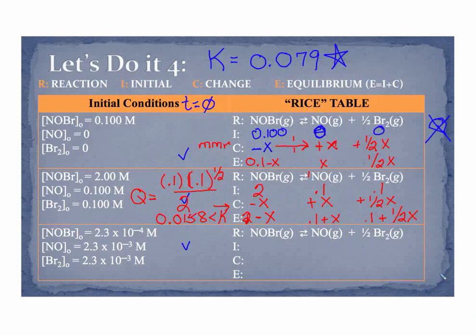Now, let's do this last one. We're not solving anything here. All I'm doing is showing you how we use Q as our predictor. Now, this is 2.3 times 10 to the minus fourth initial. Those little zeros mean at time equals zero, much like we used in our kinetics. And this is 2.3 times 10 to the minus three. This is 2.3 times 10 to the minus three. And this is 2.3 times 10 to the minus three. Now, if you calculated Q again, and it's the same as we would do before, it'd be NO to the first times BR2 to the one-half divided by NOBR.